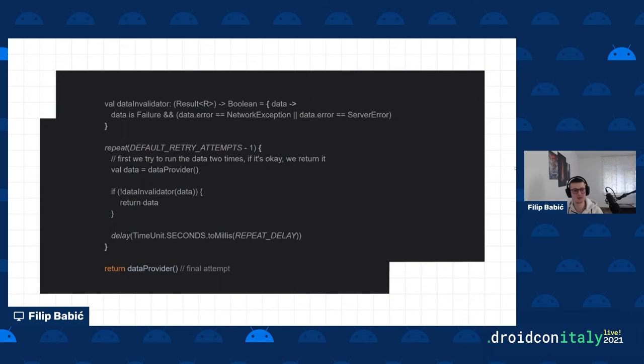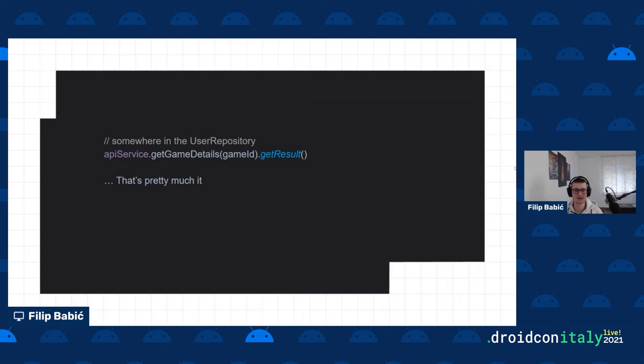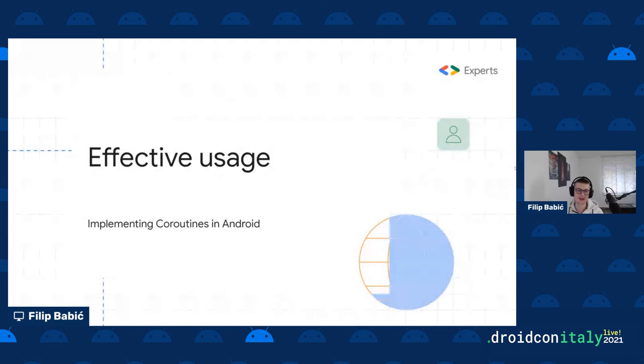All of this generic machinery creates a very simple call site. You can say `apiService.getGameDetails()` or `getUserProfile()`, call `.getResult()`, and it returns a domain model or a failure case. You define all this behavior once in a clear, straightforward way.